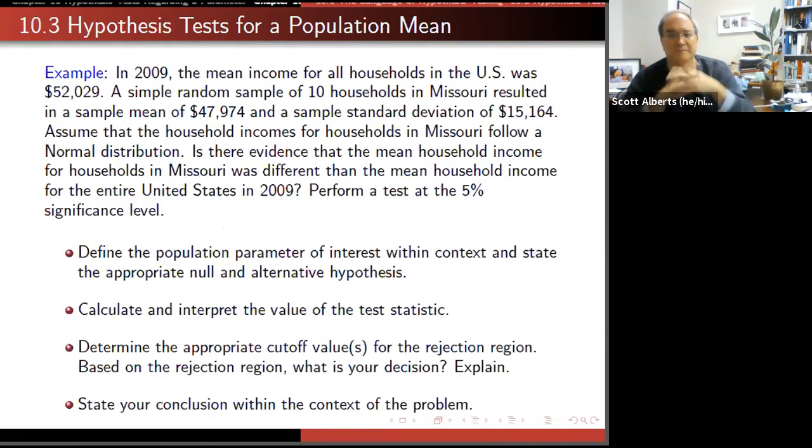Here's another example. In 2009 the mean income for households was $52,029. A simple random sample showed that we had a sample mean of $47,974 in Missouri with a sample standard deviation of $15,000. The question is, is $47,000 different enough than $52,000 that we could really say Missouri is significantly lower than the national average, or would we say that's about a tie? That sample standard deviation is going to become important because that'll give us an idea of how much variation would we expect.